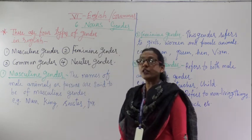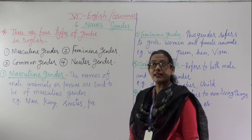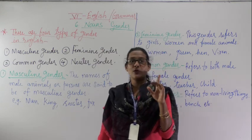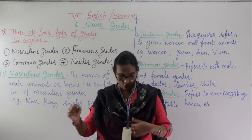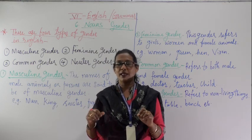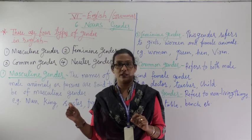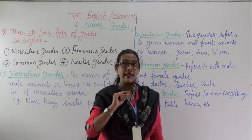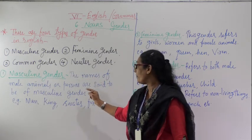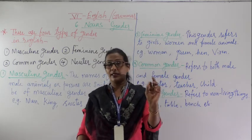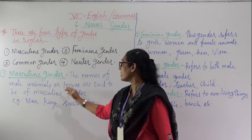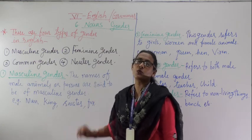So what is Masculine Gender? What is the definition of Masculine Gender? How will we understand that something is masculine? We always write in forms — male or female. Male means man; female means ladies. So the names of male animals or persons — even animals, in animals also we see male and female, both categories — are said to be Masculine Gender.